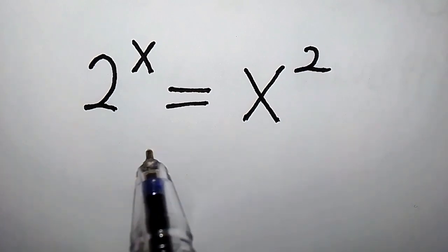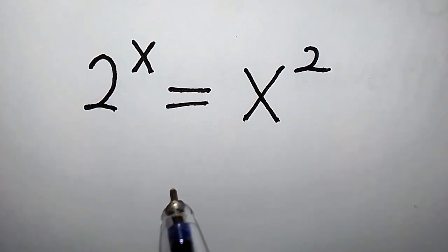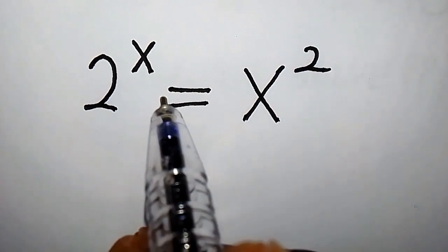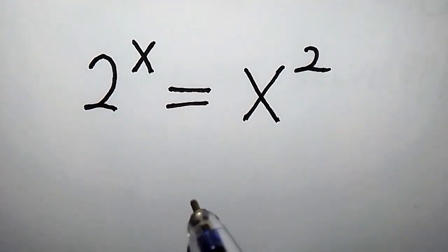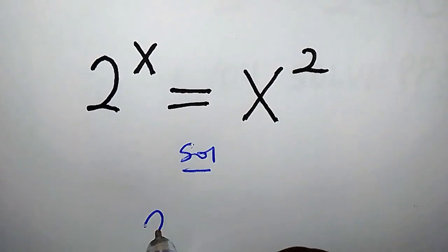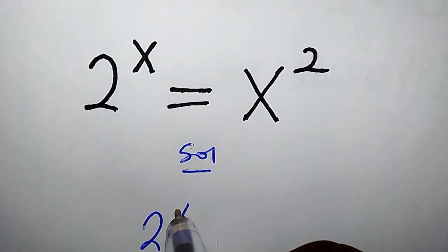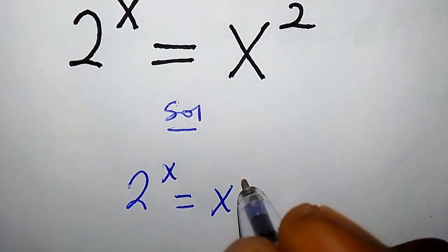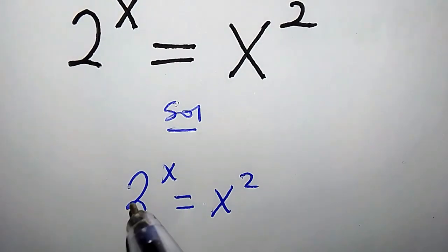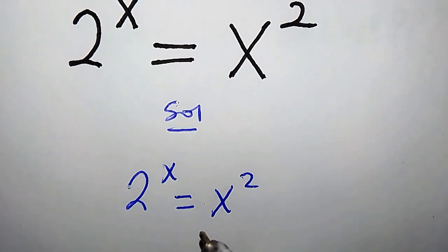We have a pretty nice exponential equation here: 2 to the power of x equals x squared. How do we find the value of x? The solution of 2^x = x² — note that 2 times x is 2x, and x times 2 is also 2x.